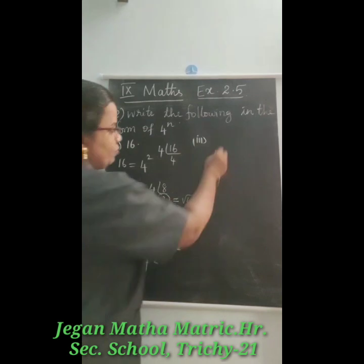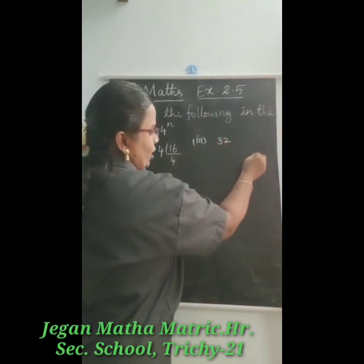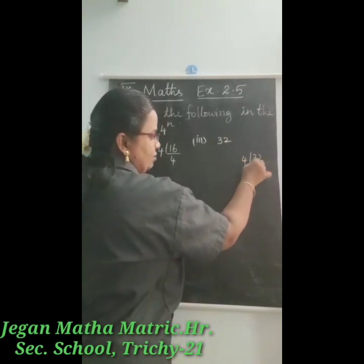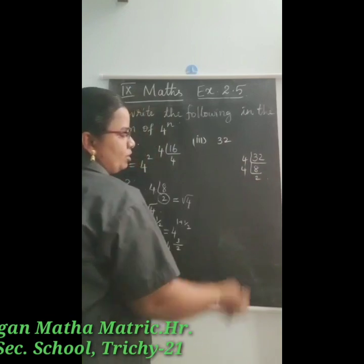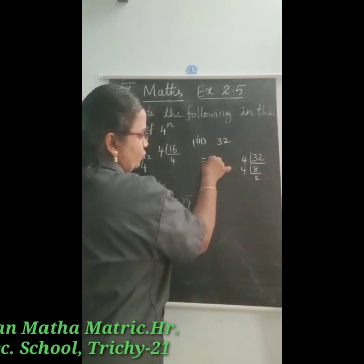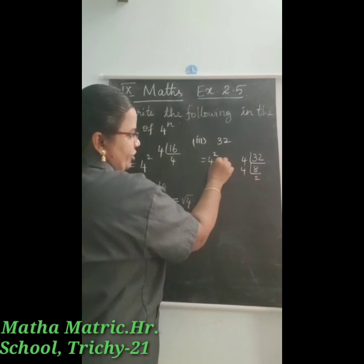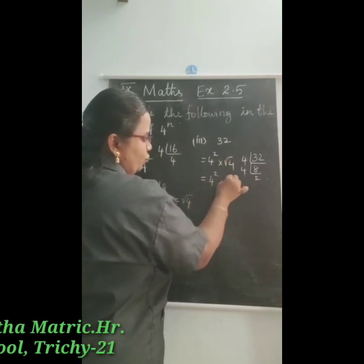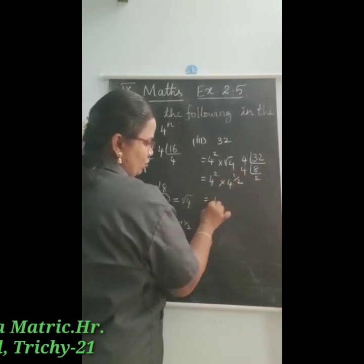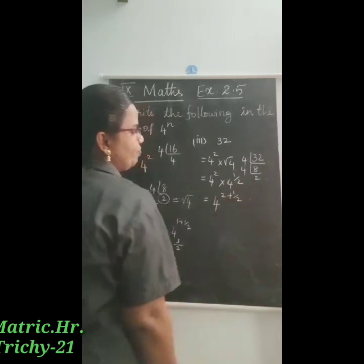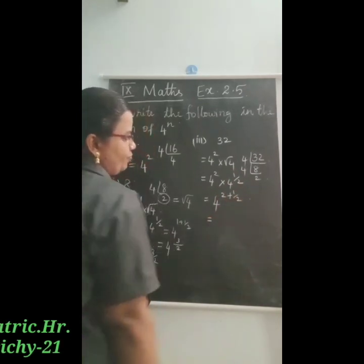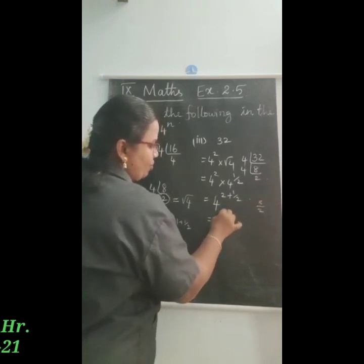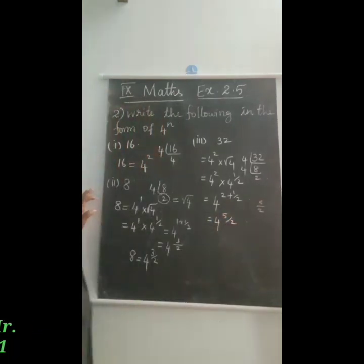The third question is 32. We take the factor of 32: 32 divided by 4 is 8, and 8 divided by 4 is 2. So we get 4 power 2 into 2. Again, 2 is expressed as root 4, which is 4 power 1 by 2. So 32 equals 4 power 2 into 4 power 1 by 2. Adding the powers: 4 power 2 plus 1 by 2, using LCM of 2 gives 4 plus 1 equals 5. So 32 is equal to 4 power 5 by 2.